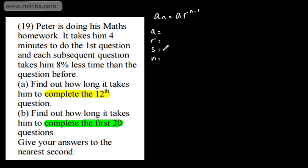We're asked for this to the nearest second. It's entirely up to you whether you want to do this in minutes or seconds. I'm going to do it in seconds, and that's going to be 240. Each one takes 8% less time than the one before, so the ratio is 0.92. And we're interested in the 12th question.